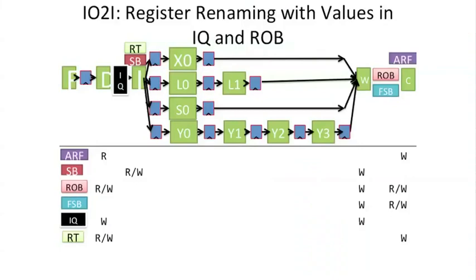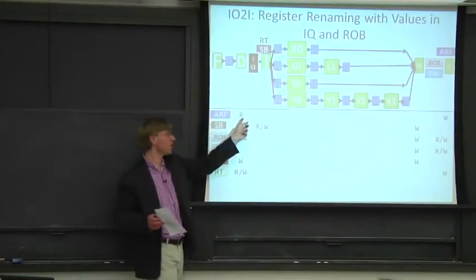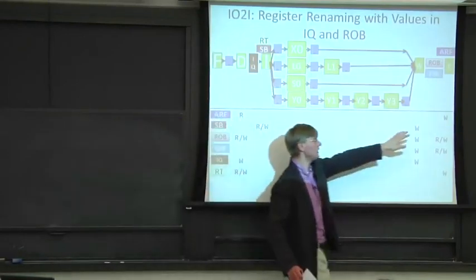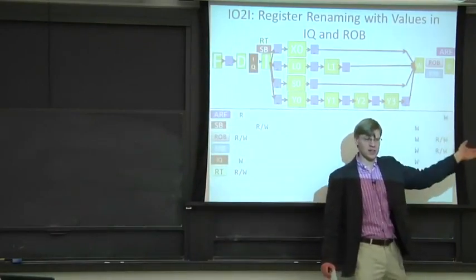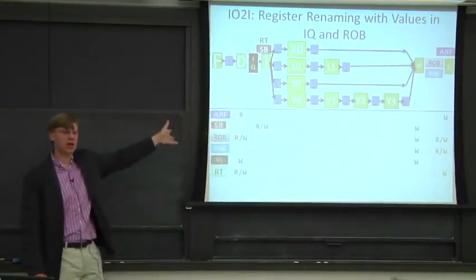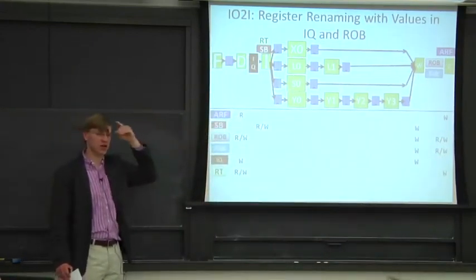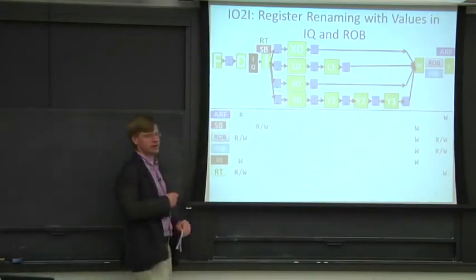For completeness, let's take a look at where things get read and written in the pipeline. One notable change is the architectural register file, which in previous architectures was only written — we didn't do reading of it except on rollback. We now actually read from it, because we might need to go find some canonical state there in this architecture. So we add an R there to denote that.